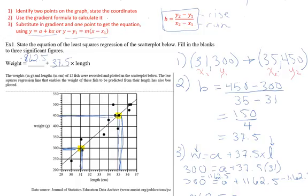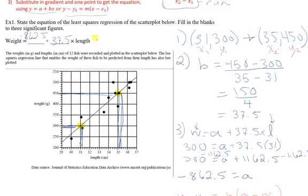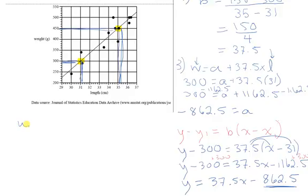Fun fact, you can do a check to make sure it works. So let's just double check that this formula here actually works for the points that we have. So what we have is that weight is negative 862.5 plus 37.5 times the length.